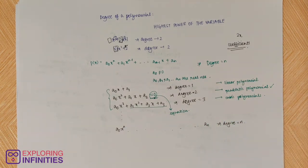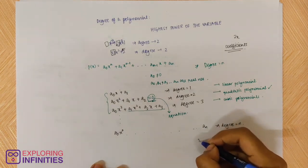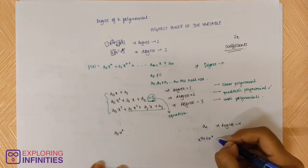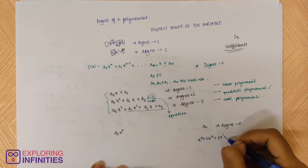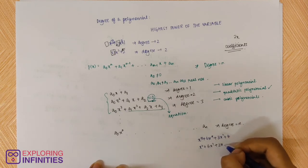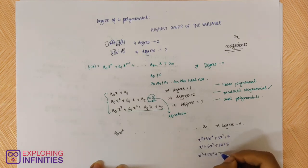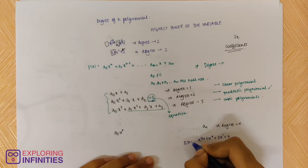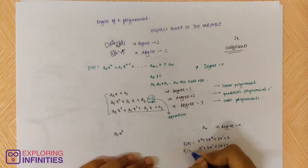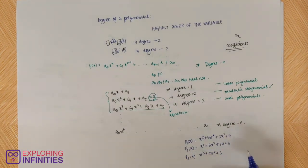Let's take a few examples and try to calculate the degrees of those polynomials. P1(x) = x¹⁰ + 6x⁴ + 3x² + 4. P2(x) = 6x⁷ + 2x + 5. P3(x) = x³ + 5x⁴ + 3. P1, P2, P3 are just names to differentiate between the three equations. For P1, the highest power of x is clearly 10, so the degree will be 10.